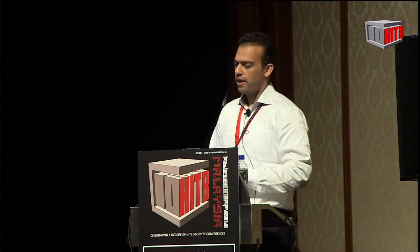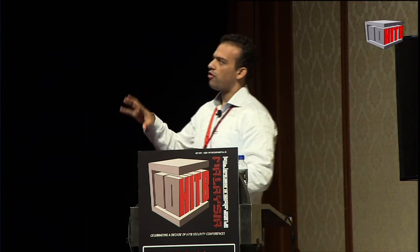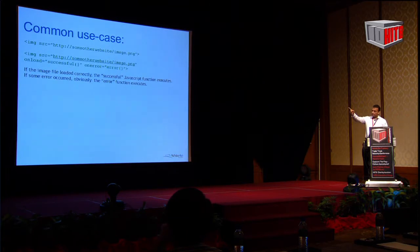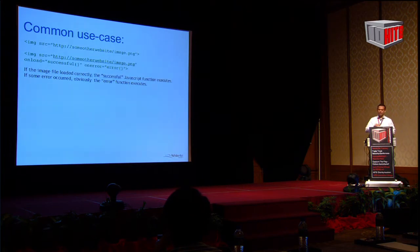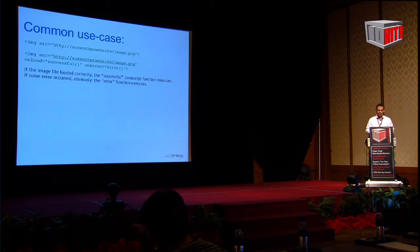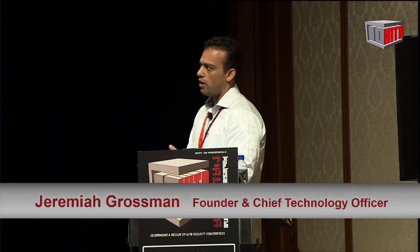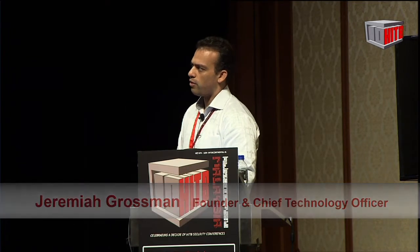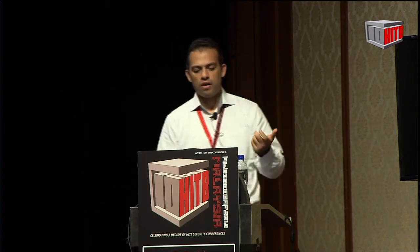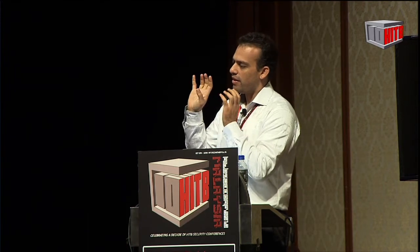All the attack techniques I want to share today share one common theme: they leverage a very basic use case — how the web was designed from the very beginning. If you have an image tag that points to some other website, your browser will make a web request to get that image. You can also detect if the image loads successfully or not with a little JavaScript: onload and onerror. If the image loaded successfully, the onload event handler fires. If the image was broken, the onerror event handler fires.